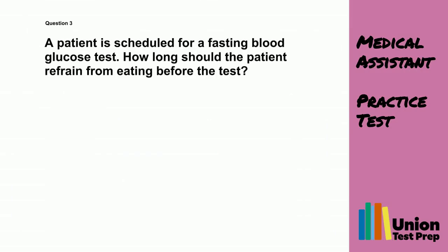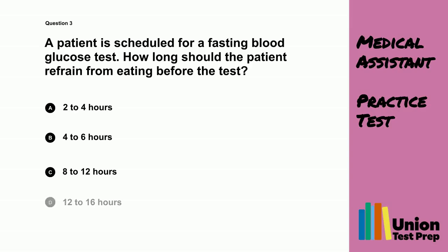Question 3. A patient is scheduled for a fasting blood glucose test. How long should the patient refrain from eating before the test? A. 2–4 hours. B. 4–6 hours. C. 8–12 hours. D. 12–16 hours.